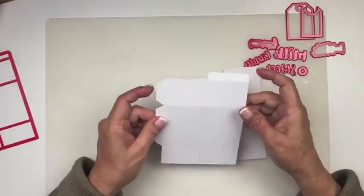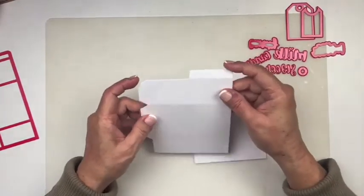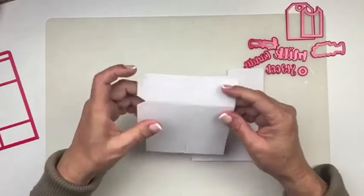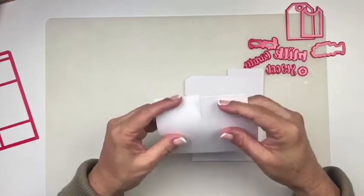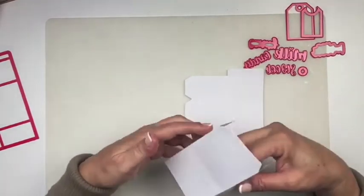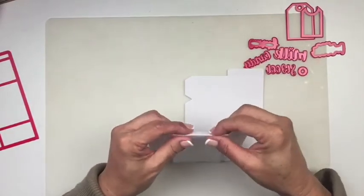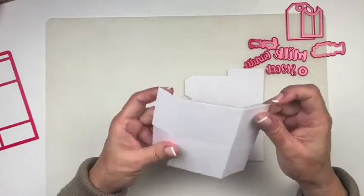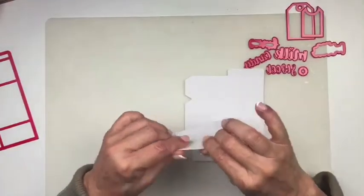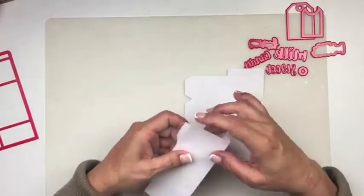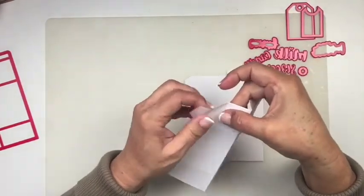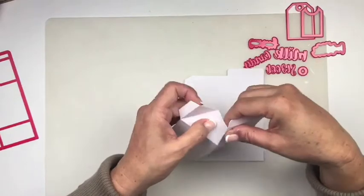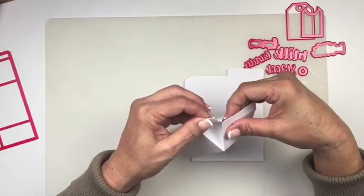So here are the two pieces and you want to start off by creasing, folding along all of the crease lines. So I'm just going to go along the vertical lines and then there are these angled crease lines right here. So you want to do a valley fold on both of them so it starts forming itself.